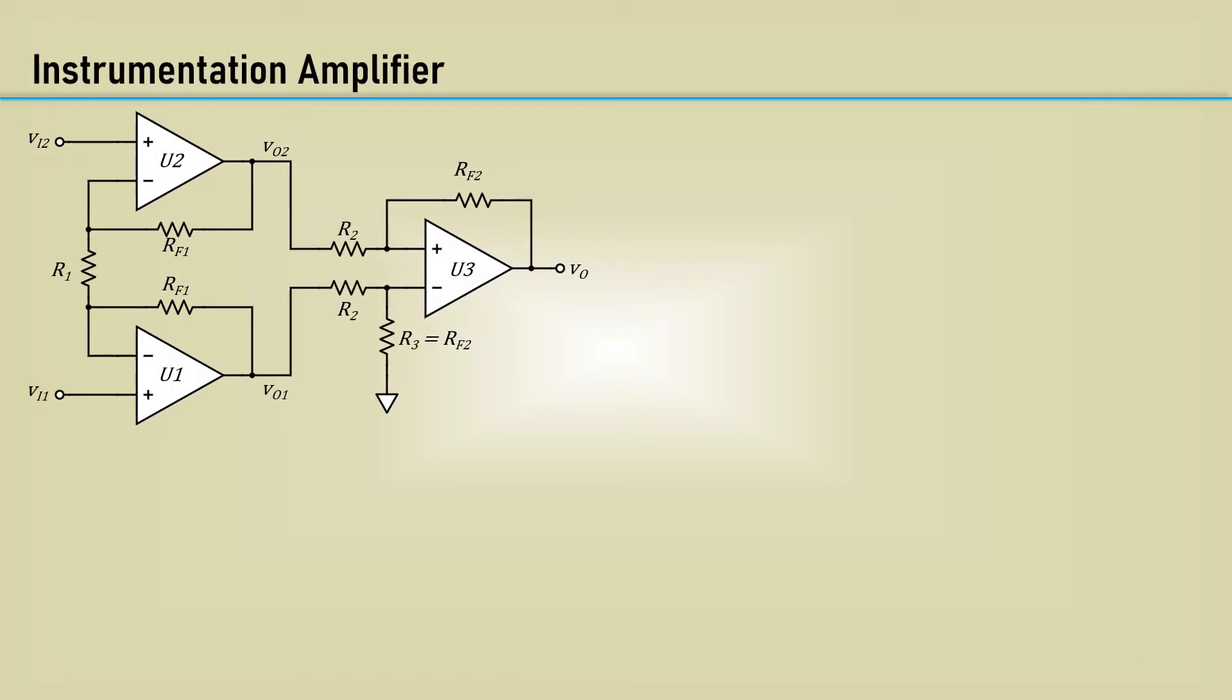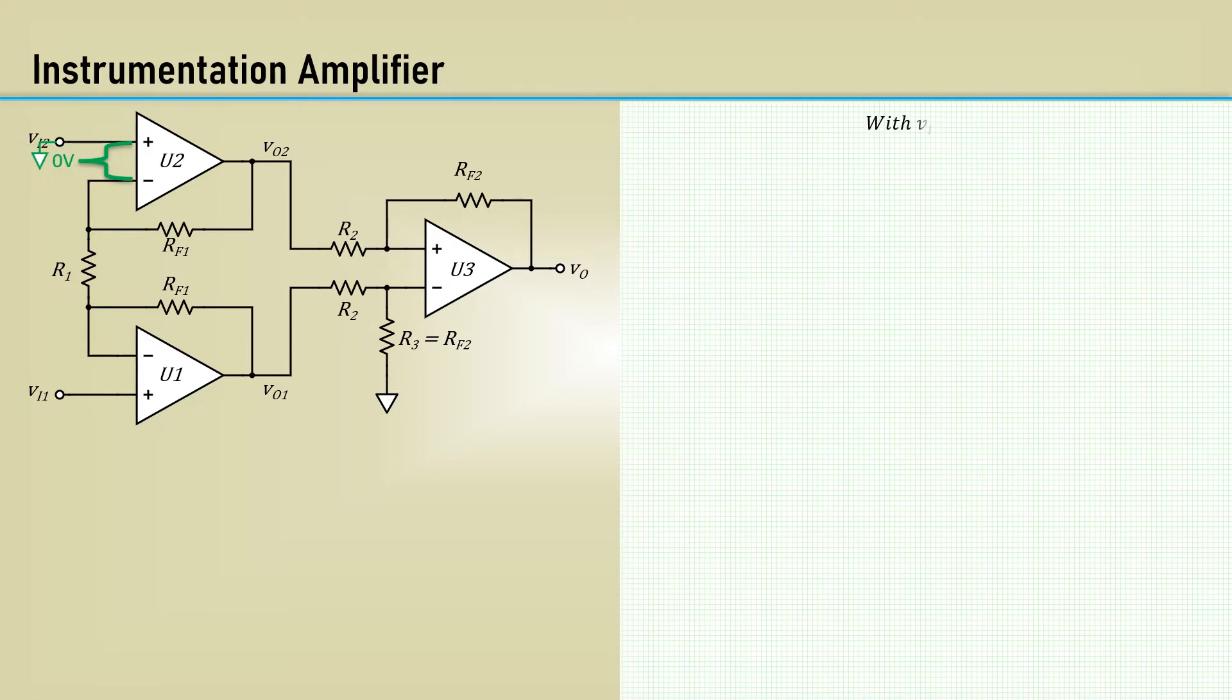The instrumentation amplifier overcomes the issue of low and mismatched input impedances. It's the difference amplifier preceded with a non-inverting buffer for each input, making for infinite input impedance. To solve for VO, we use superposition of the inputs VI1 and VI2 with VI1 equals 0. The minus V terminal of U2 is at virtual ground, and U1 operates as a non-inverting amplifier. Its output voltage VO1 is given by the non-inverting output voltage formula we already are familiar with.